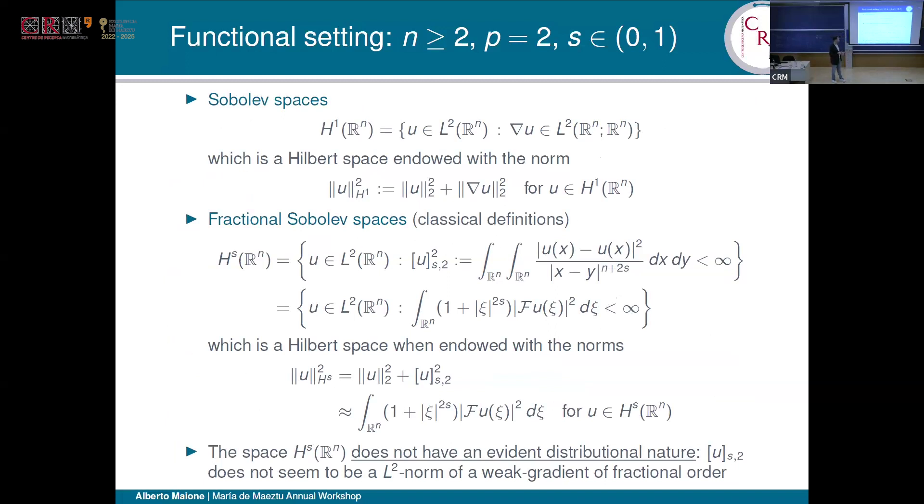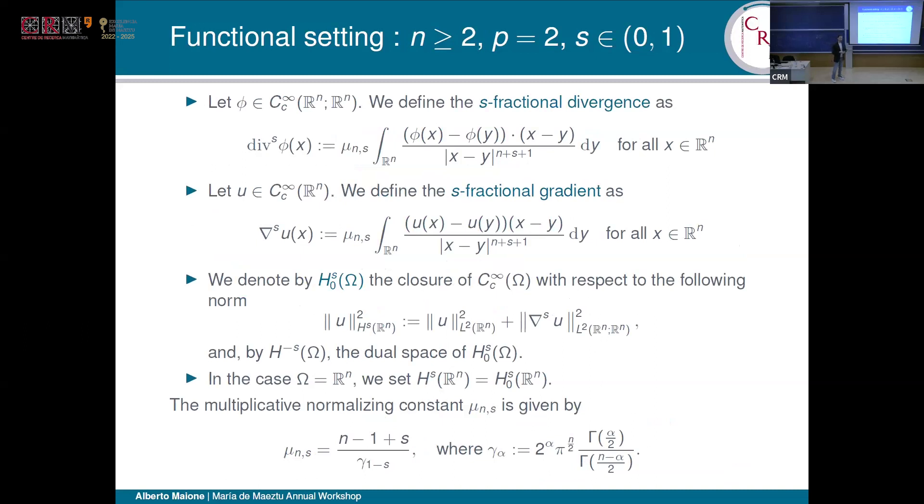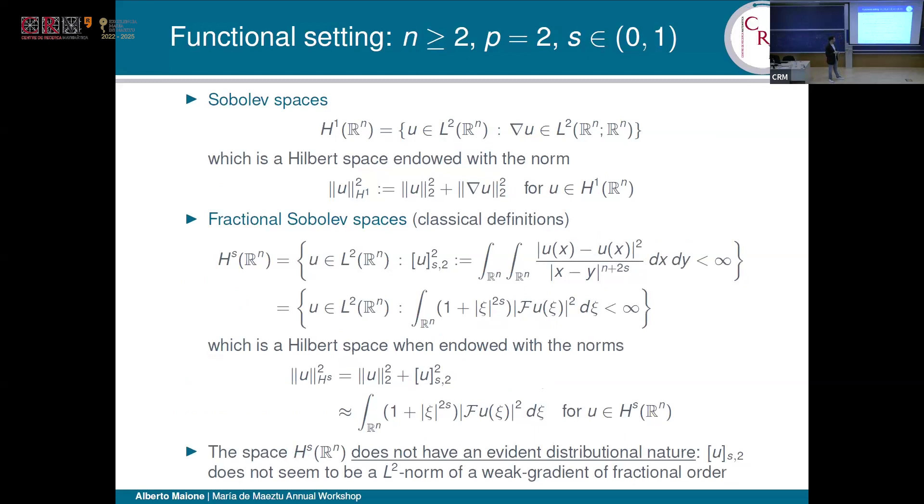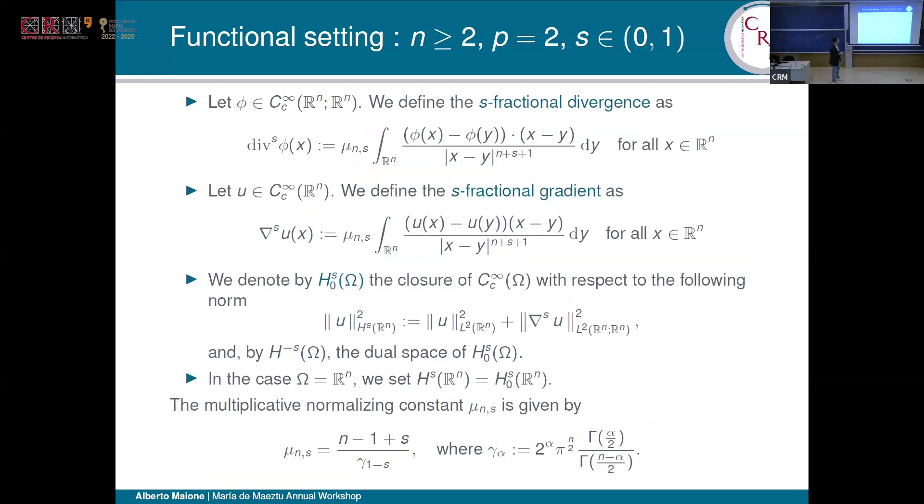The most known ones are the ones by means of the Gagliardo semi-norm or by means of Fourier transform. But now we have a problem. Which is our problem? If you remember, we want to work with divergence problems, problem in divergence form. How can we characterize a divergence form in the non-local setting? This is a problem, in particular because the space H^s, where s is our fractional parameter between 0 and 1, does not have an evident distributional nature. In particular, the Gagliardo semi-norm does not seem to be the L^2 norm of a weak gradient in any possible sense.